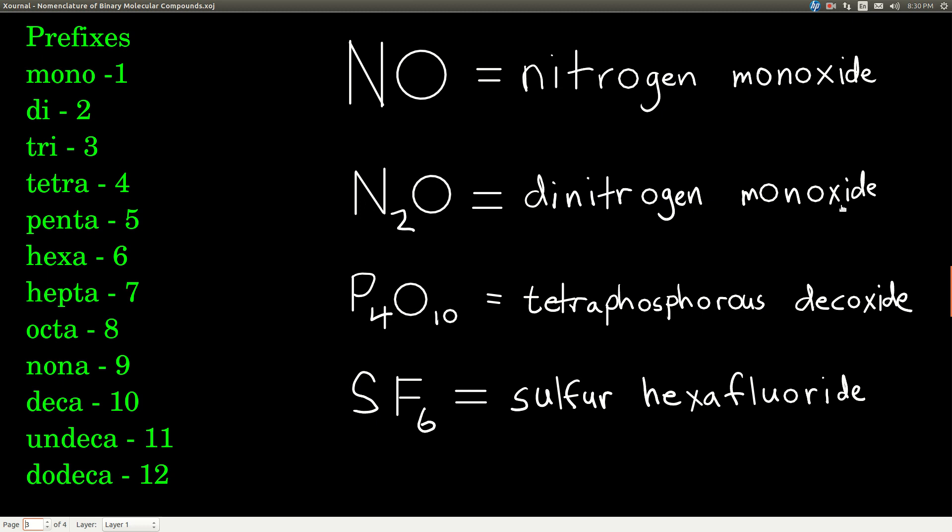Now, monoxide is acceptable, but usually when there's two vowels together, we drop one of them. This compound here, phosphorus and oxygen are both non-metals. There are four phosphorus, 10 oxygens. So we say tetraphosphorus decaoxide. We dropped the A because we had two vowels next to each other.